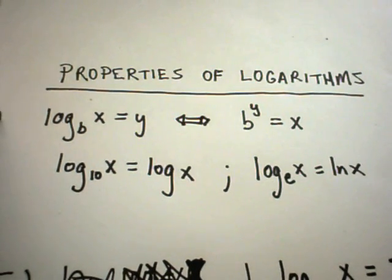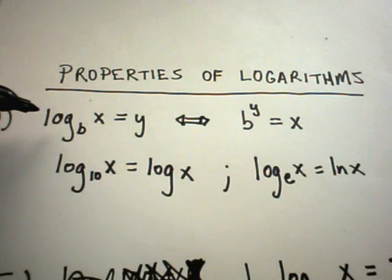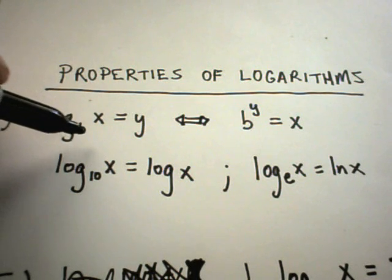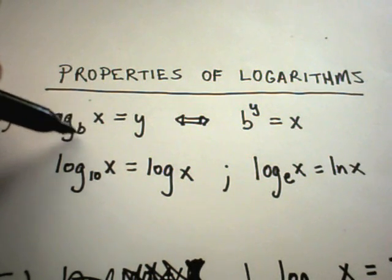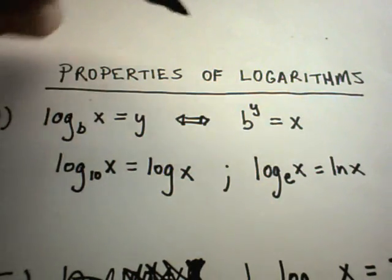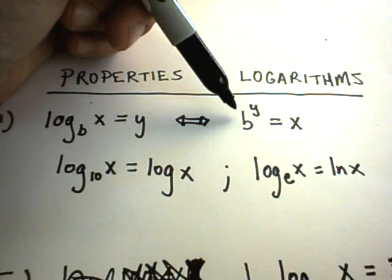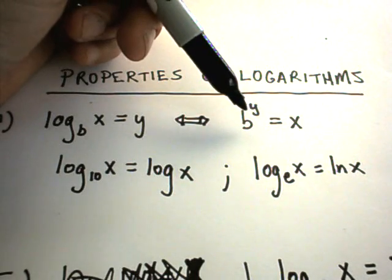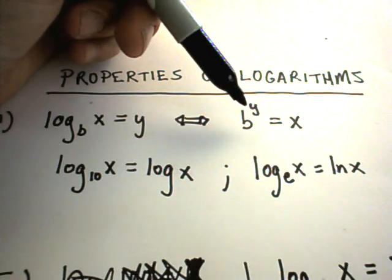Definitely one rule that you want to remember is this very first one. It says basically if you have a logarithm to the base b, so the number b is what's called the base, so log base b of x equals y, really you can rewrite logarithms in terms of exponentials by using this corresponding formula on the right hand side.